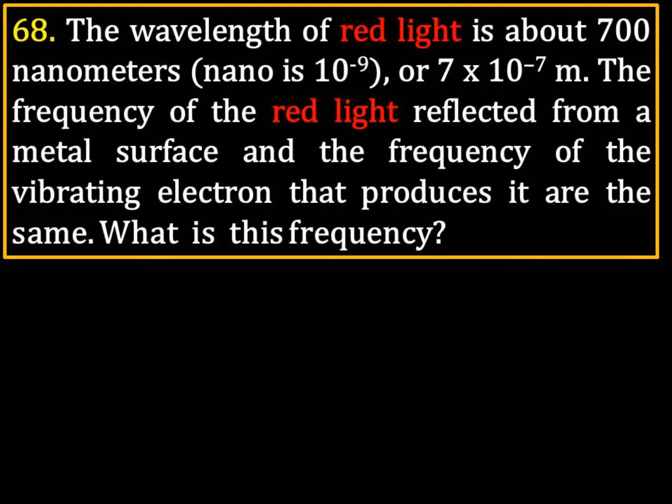The frequency of the red light reflected from a metal surface and the frequency of the vibrating electrons that produces it are the same. What is the frequency? So you're given wavelength, you know the speed of light, and you are going to calculate the frequency. Speed of light is 3 times 10 to the 8th meters per second.